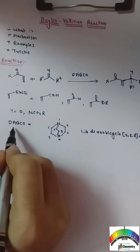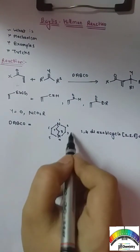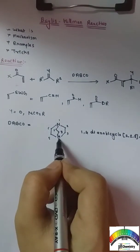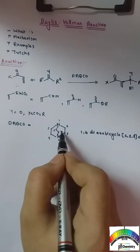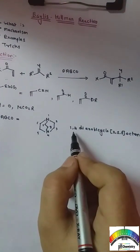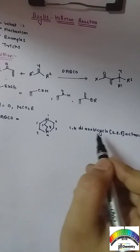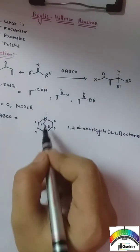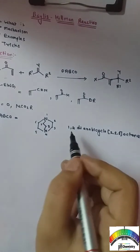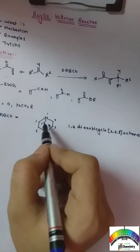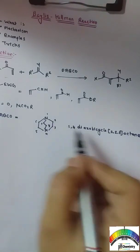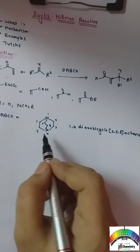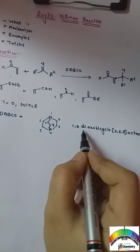So what is DAPCO? The DAPCO structure is like this. If we number this structure as 1, 2, 3, 4, 5, 6, 7, and 8, the name of this structure becomes 1,4-diaza-bicyclo-2.2.2-octane. At the 1,4 position we have 2 nitrogen groups, we have bicyclic rings, and we have 8 carbons — so octane. Shortly it is known as DAPCO.